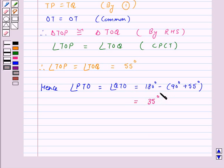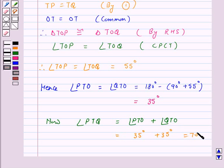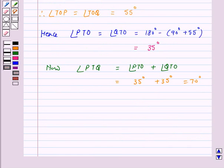Now, angle PTQ is equal to angle PTO plus angle QTO, and this is equal to 35 degrees plus 35 degrees, which is equal to 70 degrees. Hence, our option B is correct and this is our answer.